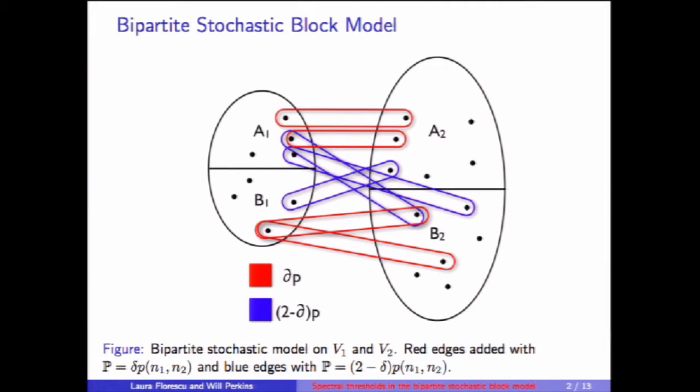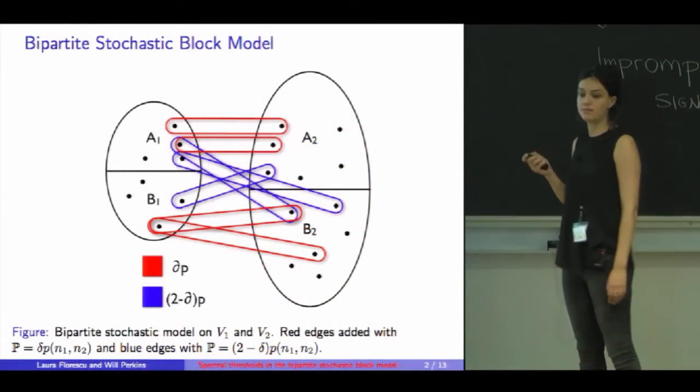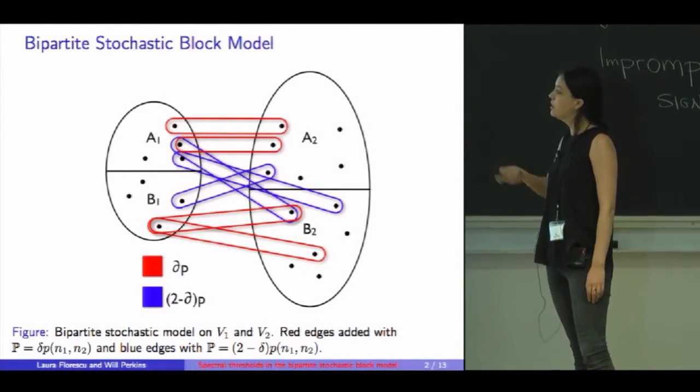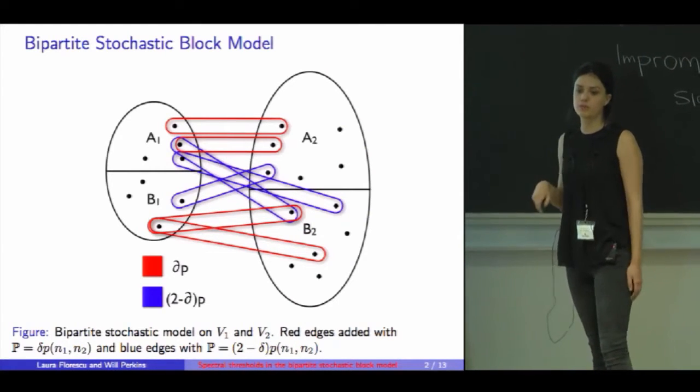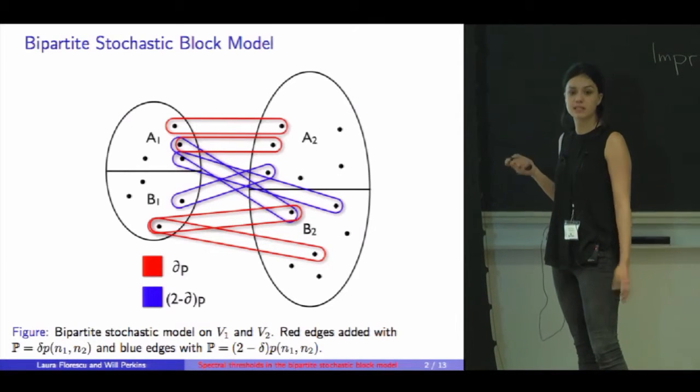The way I'm going to draw the edges in this model is as follows. For each edge of the same type, so plus-plus or minus-minus, I'm going to add it with the probability delta times P, where delta is a constant between 0 and 2, but not 1, because 1 will correspond to the random case. And P is a function of N1 and N2, the number of vertices.